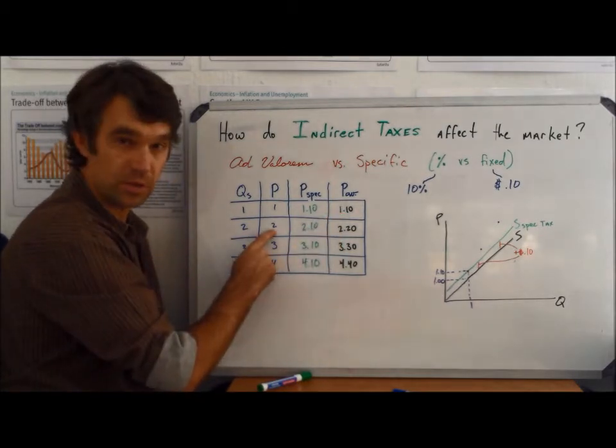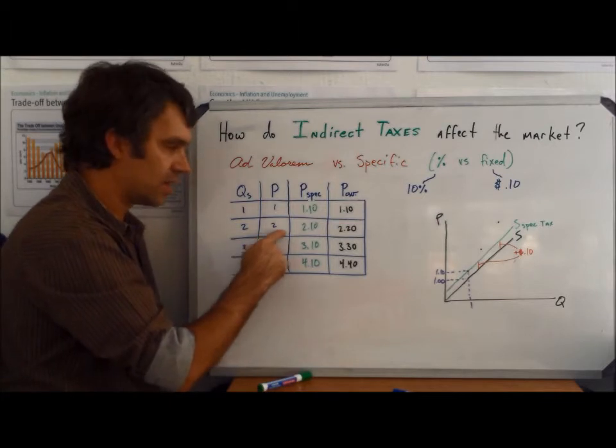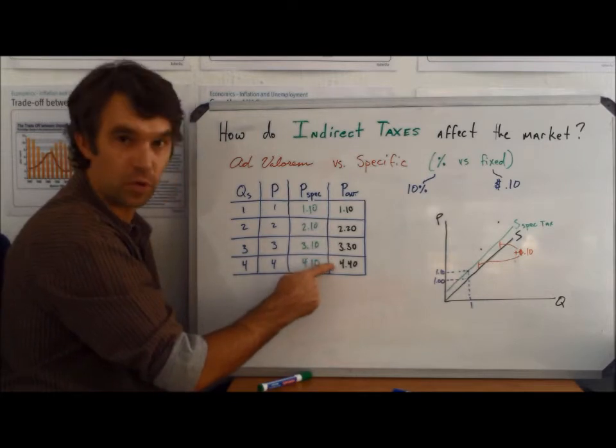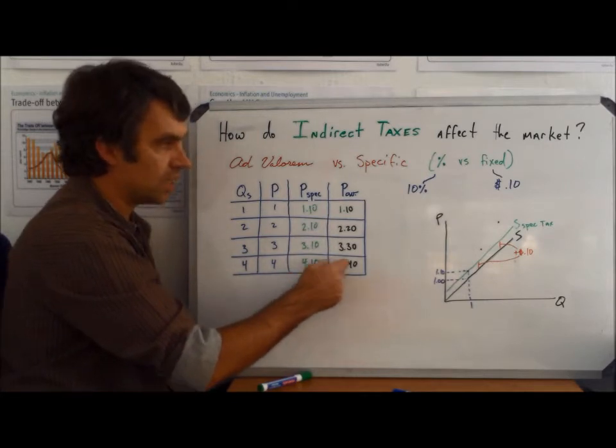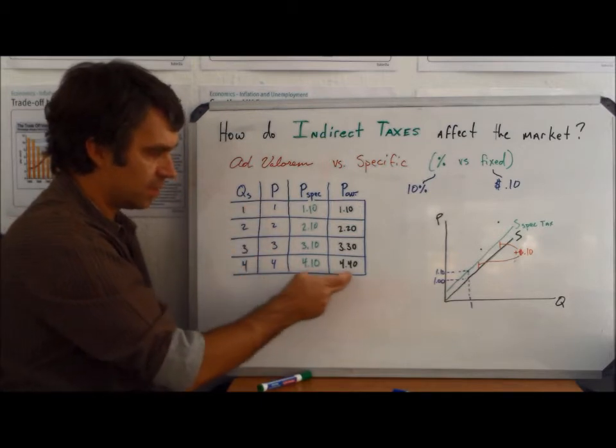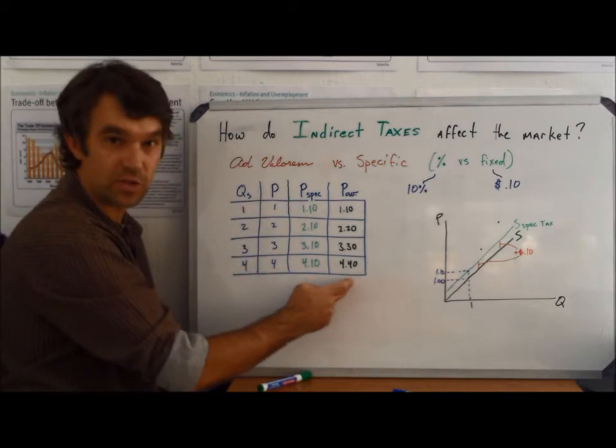But at a price of $2, now 10% of $2 is 20 cents. So instead of it being $2.10, it's $2.20, and here it's $3.30 and $4.40. So we see that with the ad valorem tax, the higher the price gets, the bigger effect the tax is going to have.